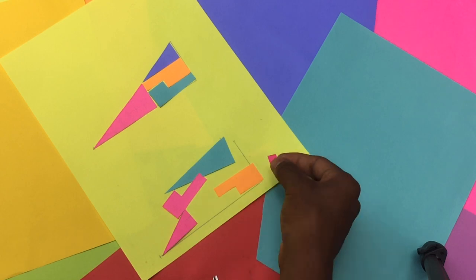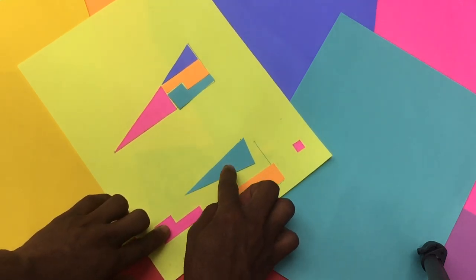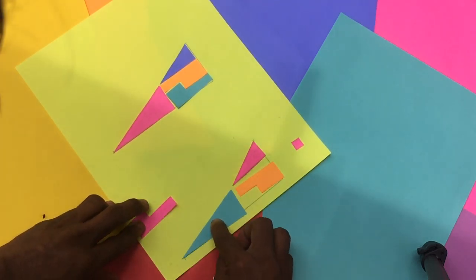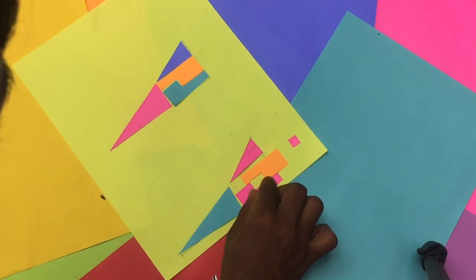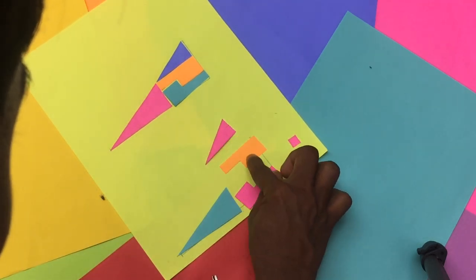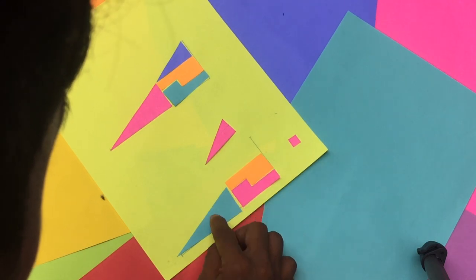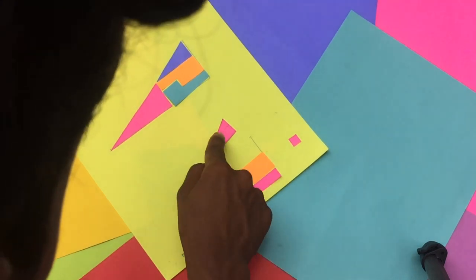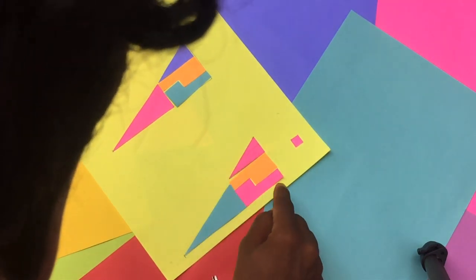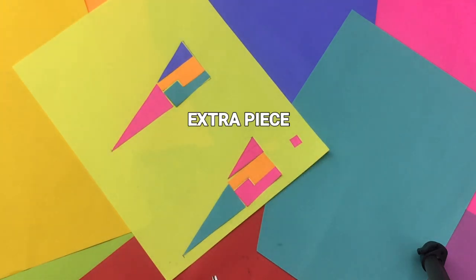So you have got an extra piece. So you will get the whole triangle again. Voila.